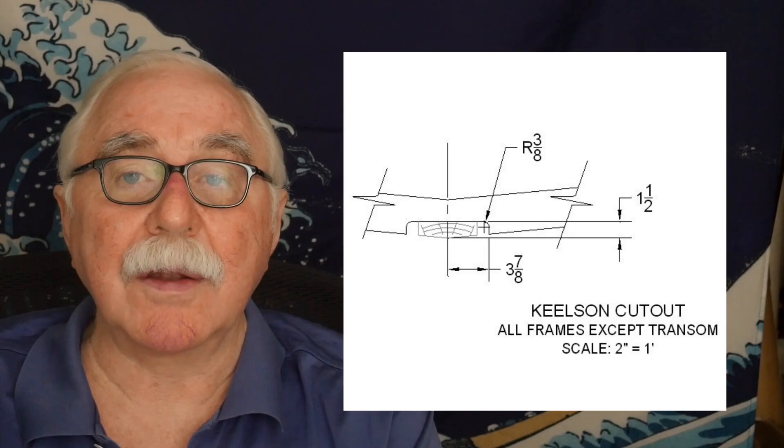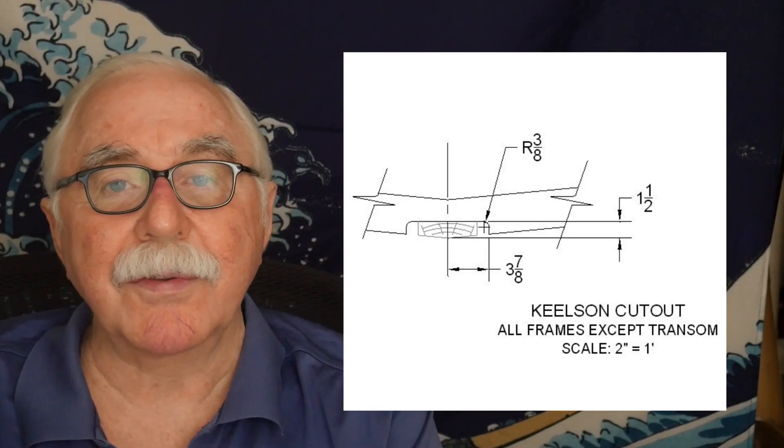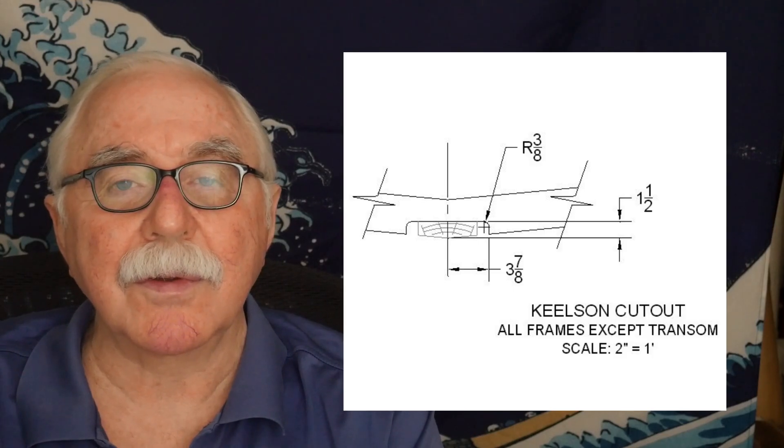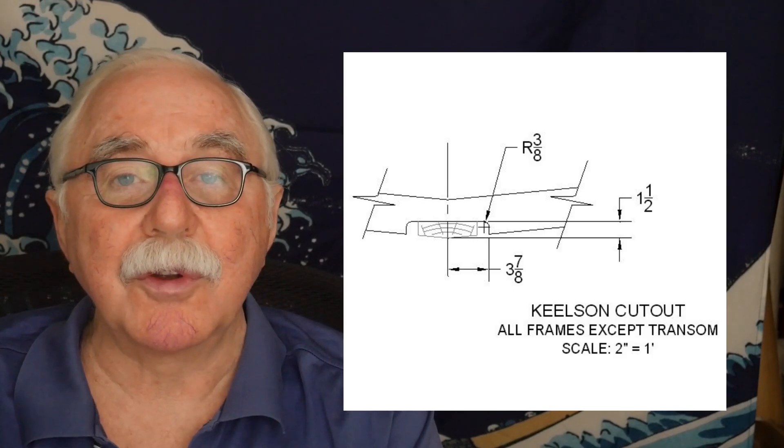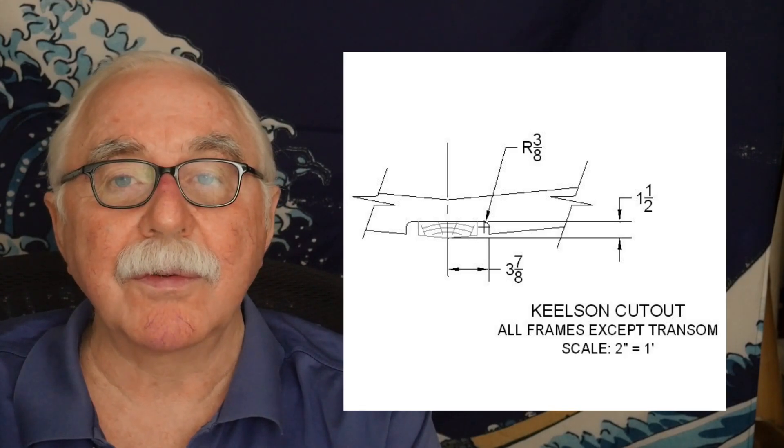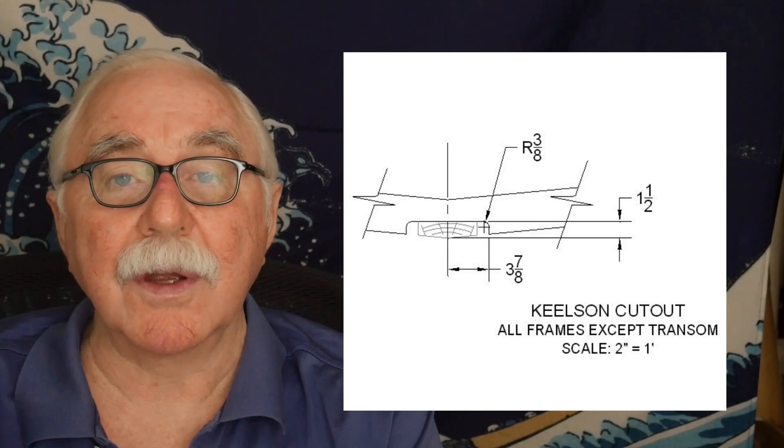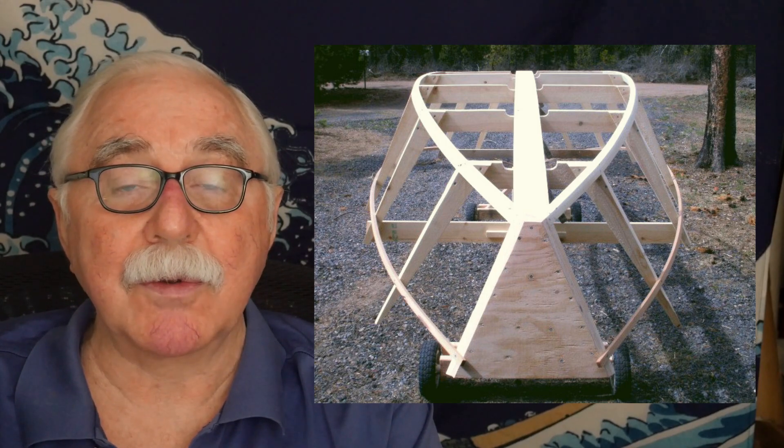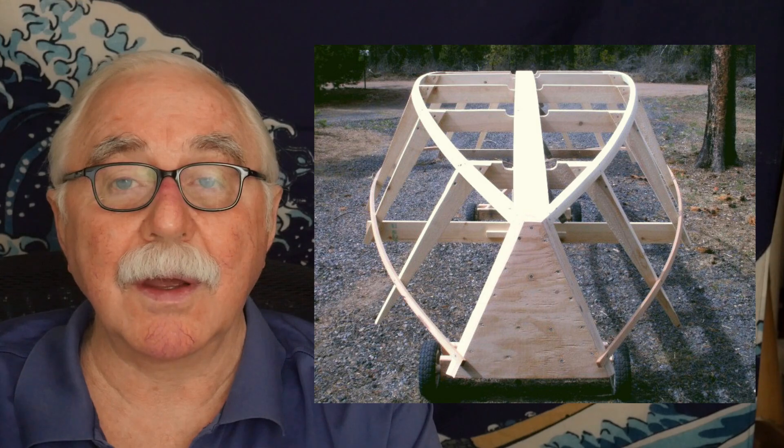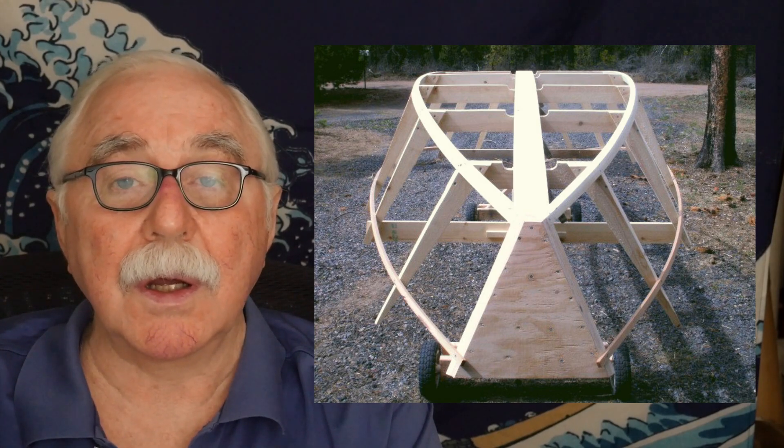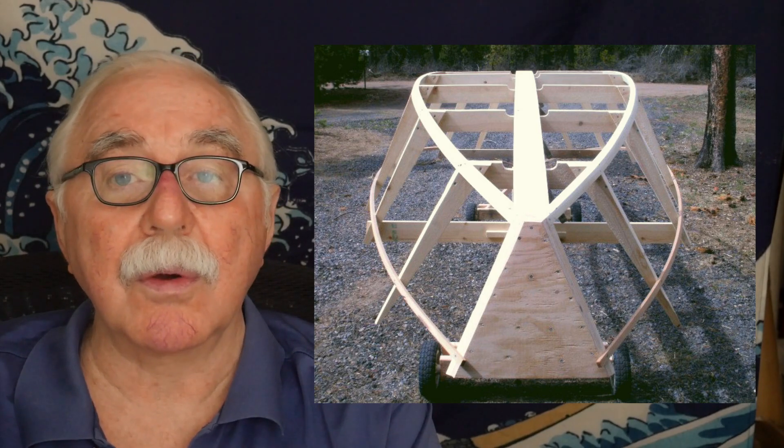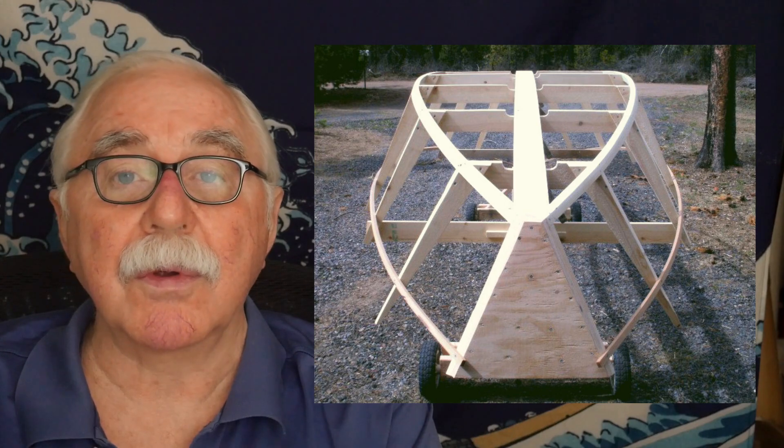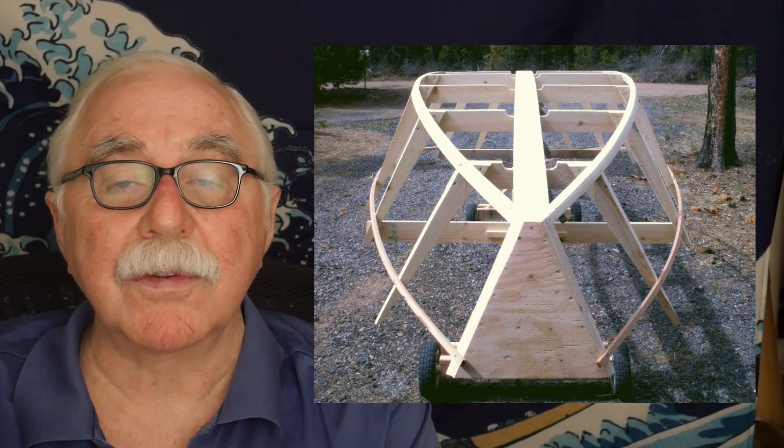Now, the next step is putting in the keelson cutout. I get a lot of emails of guys saying your keelson cutouts too wide. I don't know what's going on here. It's only a five and a half inch wide two by six keelson. And then you've got a seven inch hole that it goes in there. What's up with that? Well, what you're really looking at there is what's called limber holes. So there should be a gap between the sides of the keelson and the cutout for the keelson in the frame. And that allows water to drain between frames. So it's really done for that purpose.